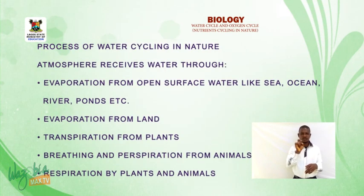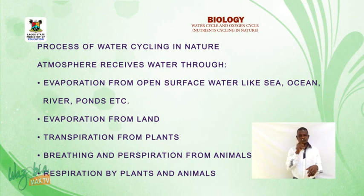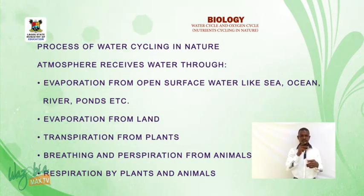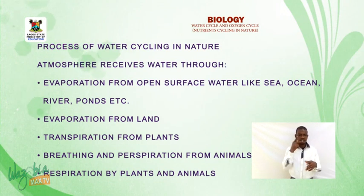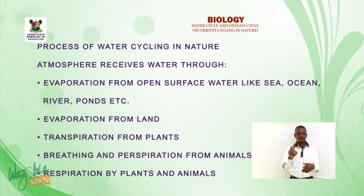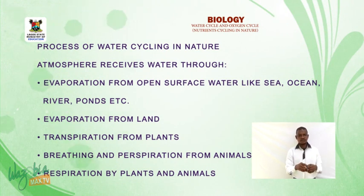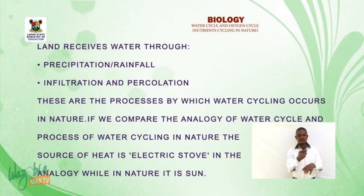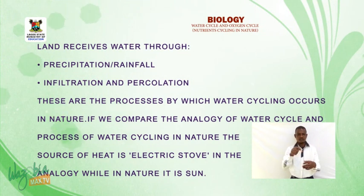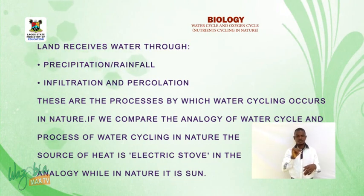Process of water cycling in nature: the atmosphere receives water through evaporation from open surface water like seas, oceans, rivers, and ponds; evaporation from land; transpiration from plants; and breathing and perspiration from animals, as well as respiration by plants and animals. Land also receives water through precipitation or rainfall, infiltration, and percolation.